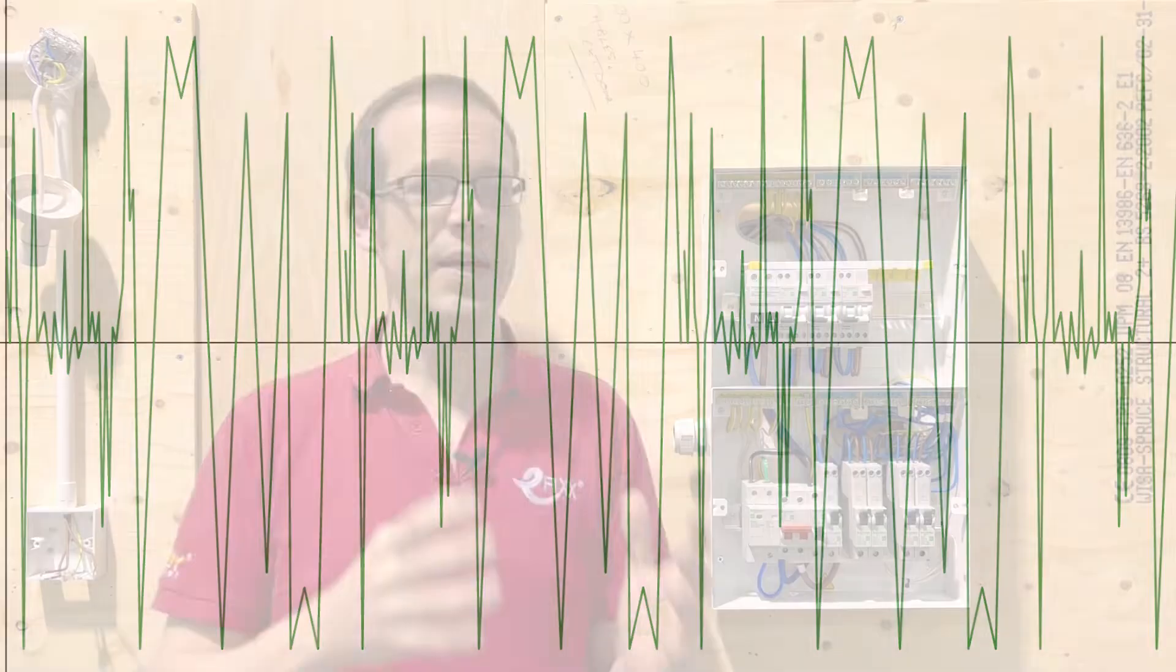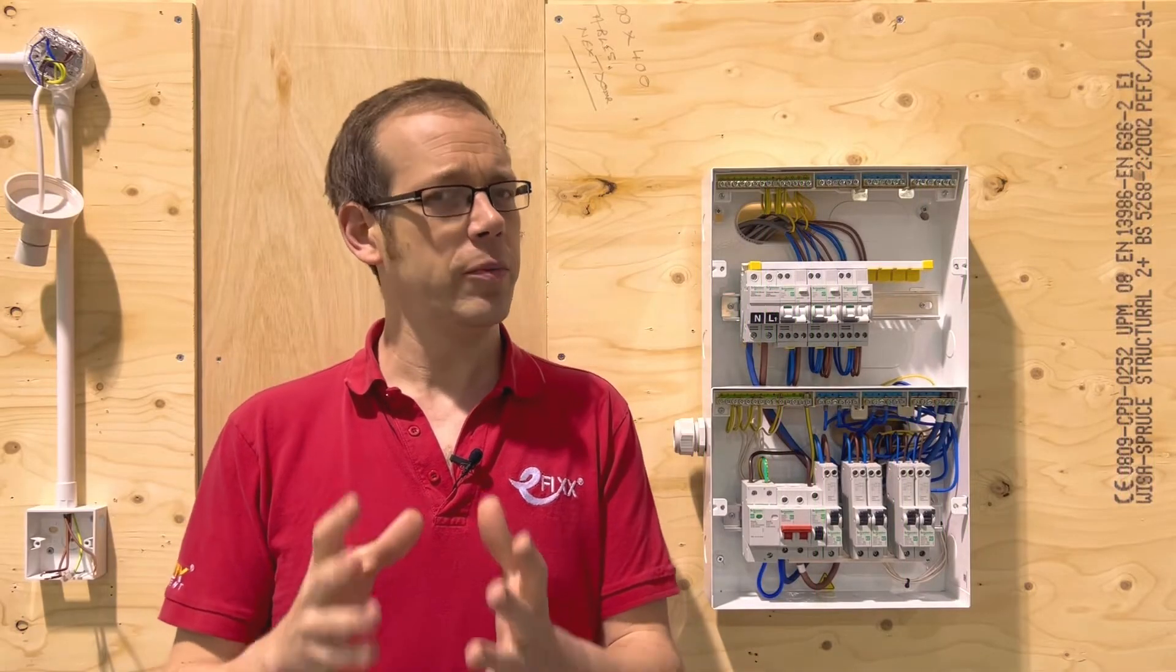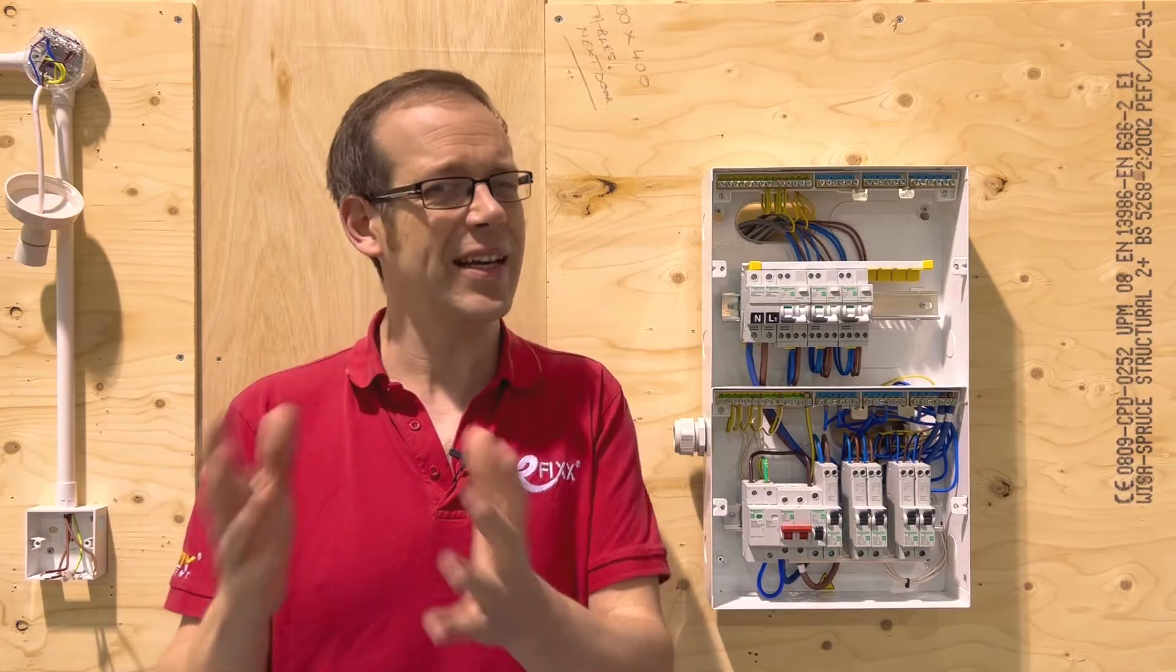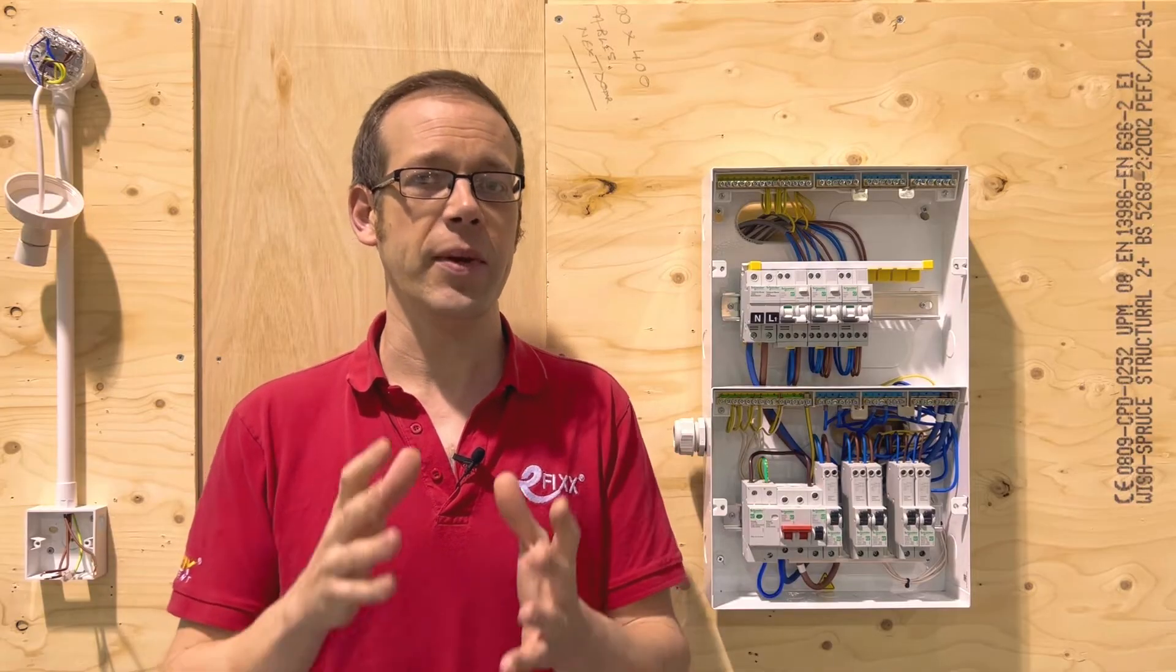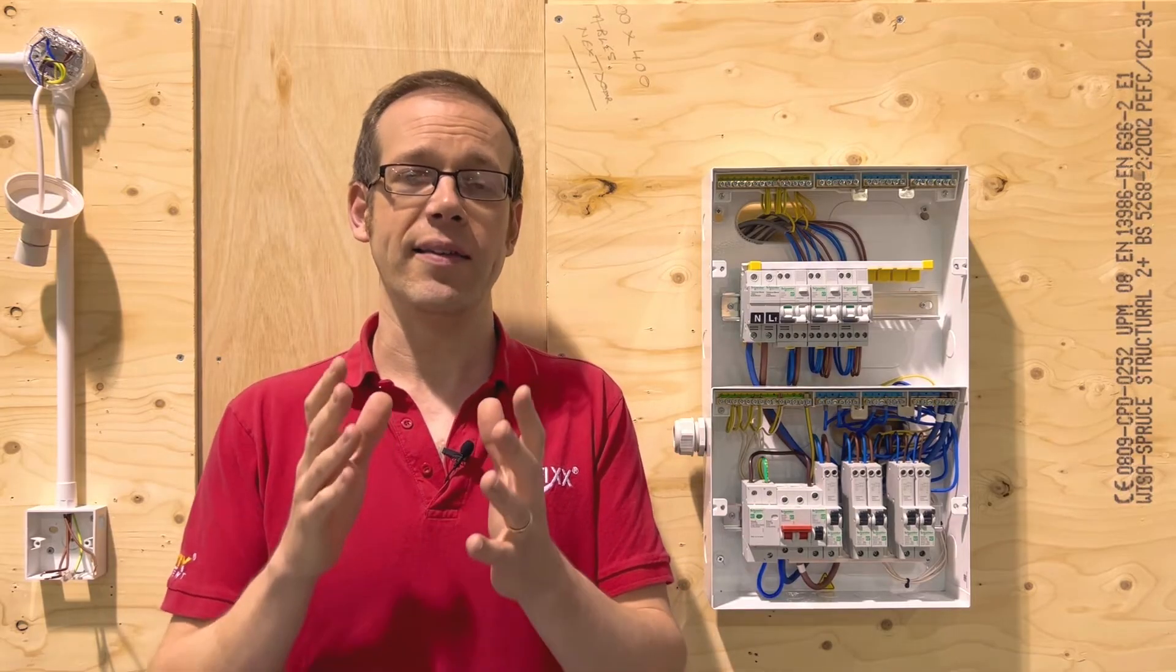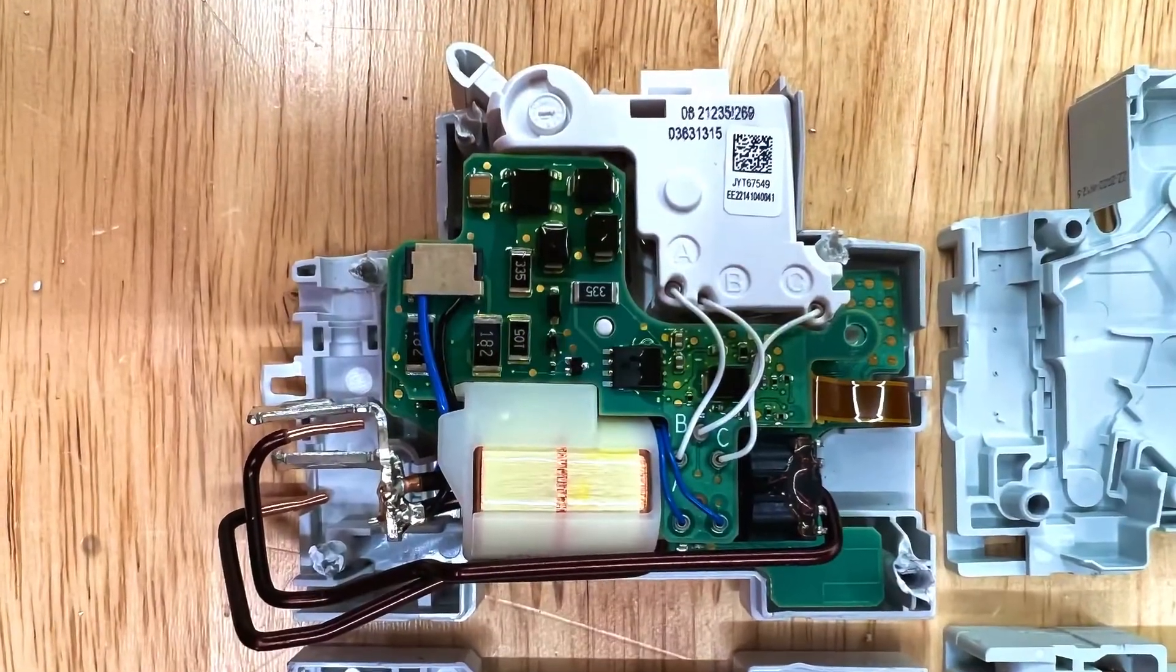Now while this messy waveform may look totally random it actually forms a fairly predictable shape like a signature in the flow of current that can be identified by software as the creation of an arc in a circuit and that really is the key to how an AFDD works.